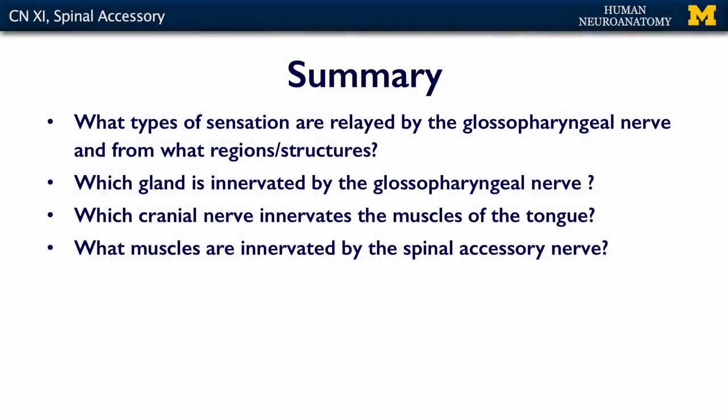So in summary, what do I want you to know? I want you to know what types of sensation are relayed by the glossopharyngeal nerve and from what regions or structures. Which gland is innervated by the glossopharyngeal nerve? Which cranial nerve innervates the muscles of the tongue? And what muscles are innervated by the spinal accessory nerve? If you have a grasp on all of these concepts, then you're ready for the assessment.